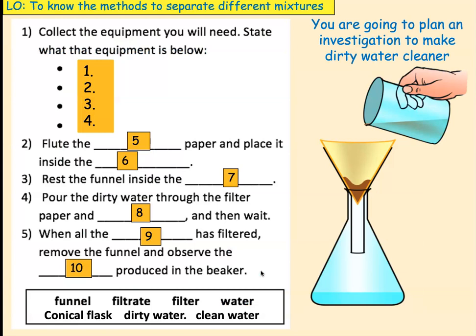Right, we're going to pause the video again here. If I wanted to investigate how to make dirty water clean, I've got dirt particles and water. I would use this equipment. So, I would like you to put the numbers 1 to 10 and put, using the words at the bottom, the words that should go in each of the spaces. I'm going to pause the video now and we'll come back to it in a minute.